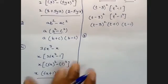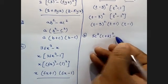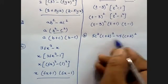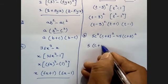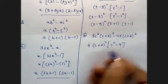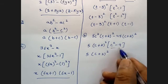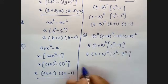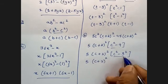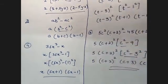Seventh sum: 5C squared into C plus 2 whole squared, minus 45 into C plus 2 whole squared. Here 5 is common and C plus 2 whole squared is common. What is left? C squared, and after taking 5 out from 45, nine is left. So we have 5 into C plus 2 whole squared into C squared minus 9. Now C squared minus 9 is C squared minus 3 squared, giving 5 into C plus 2 whole squared into C plus 3 into C minus 3. This is the answer.